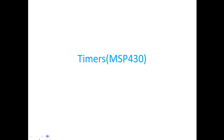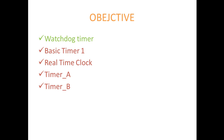In this video, I am going to explain about timers in MSP430. First, let us see what timers are available in MSP430: we have a watchdog timer, basic timer, real-time clock, timer A, and timer B.